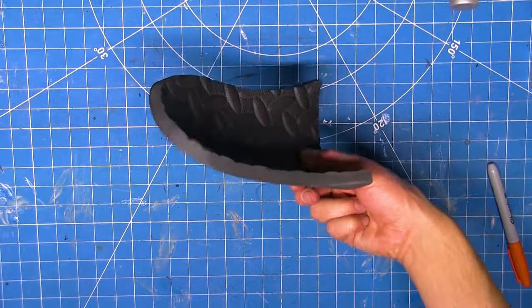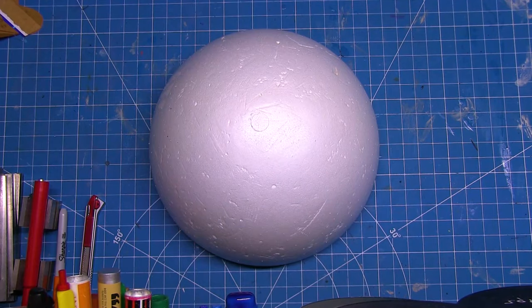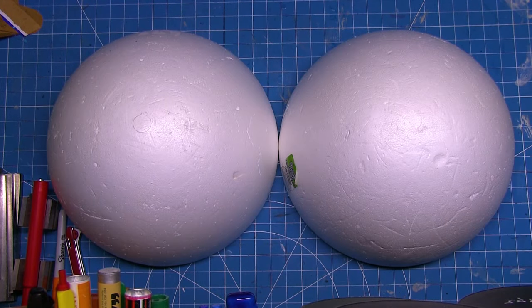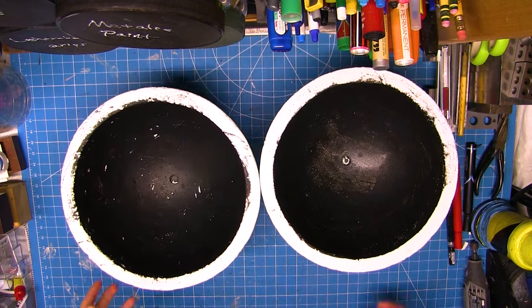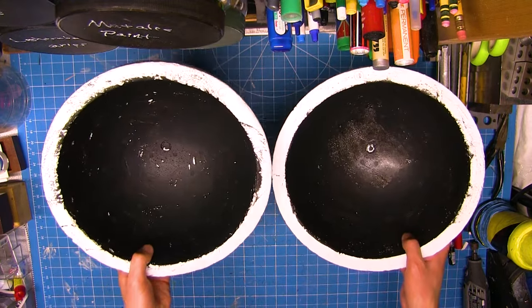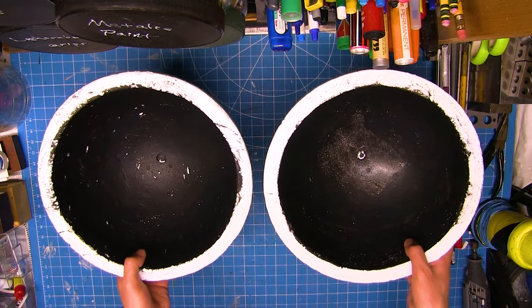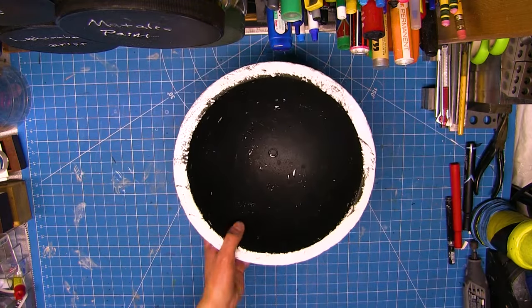For the body, I used the largest styrofoam dome available at my local craft store, two of them actually, to make a sphere. Pro tip, don't try this build during the holiday season because these will all be sold out due to kids making fake snowmen. Curse you childhood whimsy! What a waste of good robot parts.